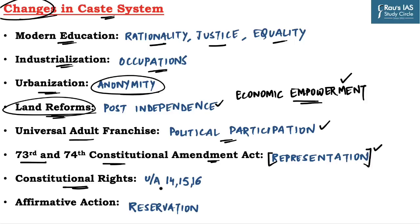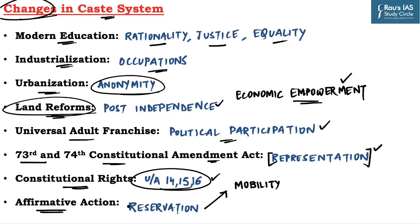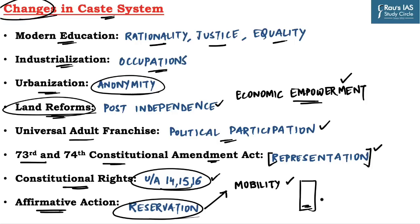Constitutional rights under Articles 14, 15 and 16 are provided to all citizens irrespective of caste, religion or region. The last change is affirmative action, which in simple terms is related to the reservation policy followed by Government of India to provide additional support to people from lower castes who are educationally and economically backward, further helping in mobility of lower caste people who are mostly stuck in the lower rungs of society.